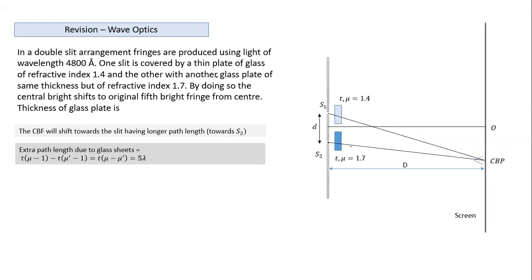By doing so, the central bright fringe shifts to the fifth bright fringe position. The optical path difference created by the two sheets together is equivalent to five lambda. The extra path length due to the glass sheets equals 5 lambda.